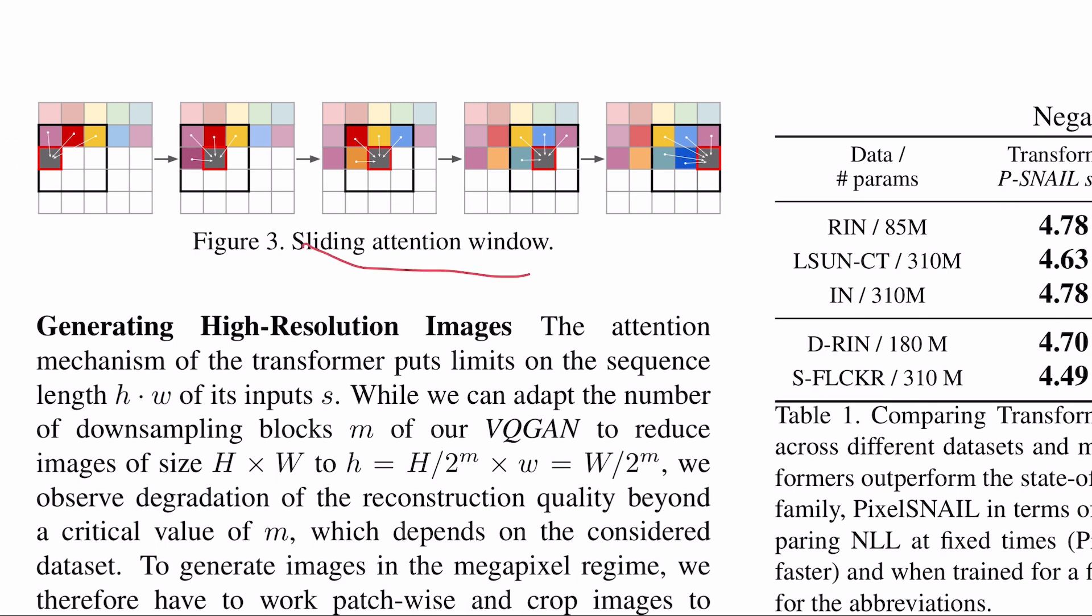To alleviate the problem of the computational demands of transformer even more, authors do a sliding attention instead of full attention. If we want to predict which code word is on this position in the image, we do not look at all other code words which were already predicted, but we only look at the neighborhood, like neighborhood which is smaller than the entire image. This is supposed to work when the image has some uniform structures which are spatially independent. For example, if you have a landscape and you have a really long river and you have some mountains, and if you look at different locations on the mountain, then probably they are independent.